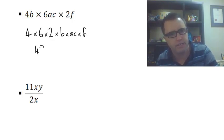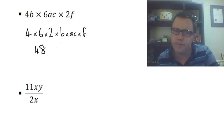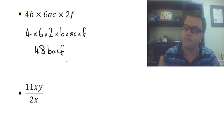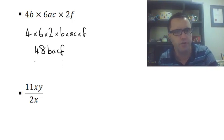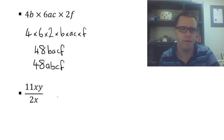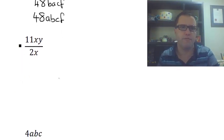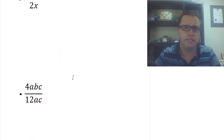4 times 6 is 24, times 2 is 48. So I've got 48. Now remember, we don't have any multiplication signs anymore. So we've got b, a, c, f. But as I said before, we like it in alphabetical order. So 48abcf.